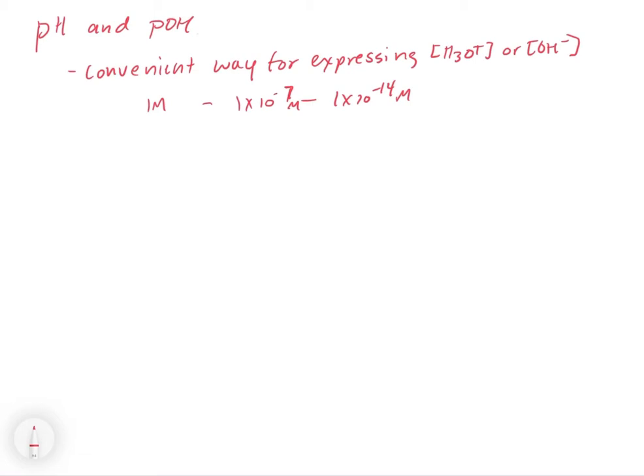So in this case this would be 0 to 14. What we're doing is collapsing this very large range of 14 orders of magnitude into a smaller range of just 14 numbers, where we use a log scale to condense this.